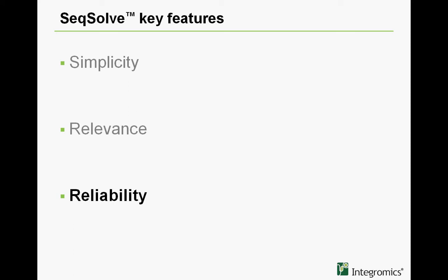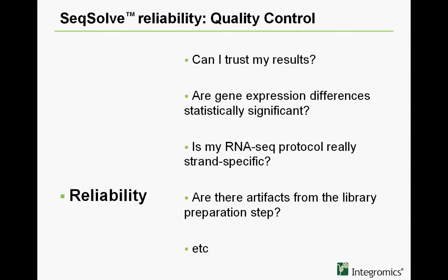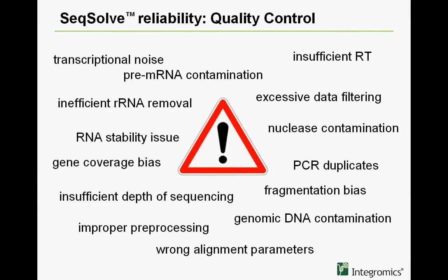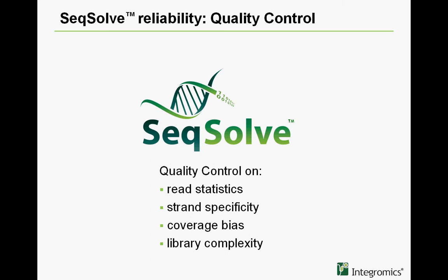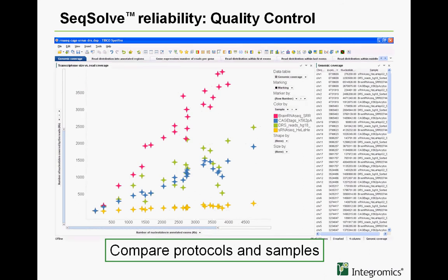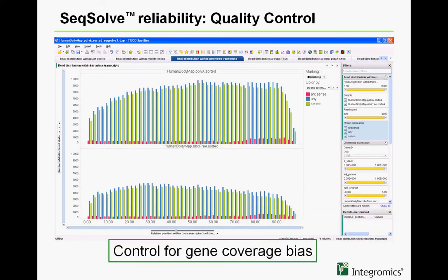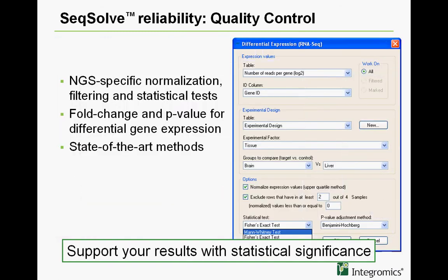Last but not least, reliability. Can you trust your data? Are results significant or not? Are there technical issues from the experimental part? Any bias potentially affecting the analysis? There are a lot of potential issues from the experimental part or from the upstream part of the computational analysis. SIGSOLVE clears it out by providing an advanced, automatic, and state-of-the-art quality control, so that you can compare protocols and samples, easily detect outliers, and control for experimental bias in the library preparation, for instance. Moreover, SIGSOLVE features NGS-specific and state-of-the-art analysis methods, bringing statistical significance to your results.